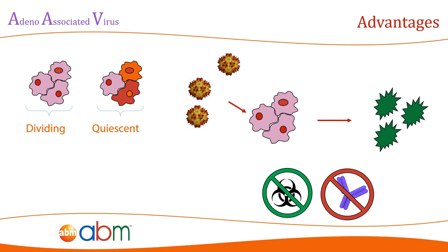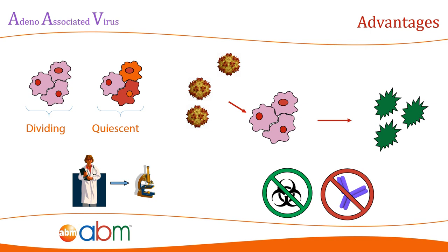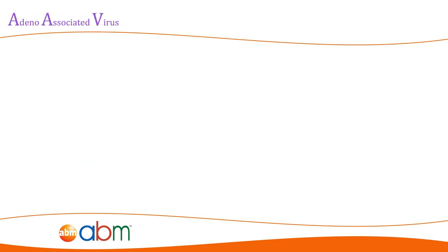AAV vectors have been used in over 117 clinical trials worldwide to date, including a number of promising results in trials for Leber's congenital amaurosis, hemophilia, congestive heart failure, lipoprotein lipase deficiency, and Parkinson's disease.